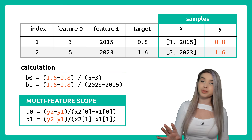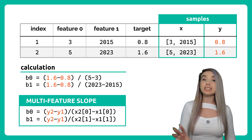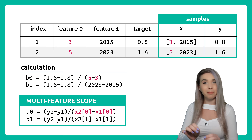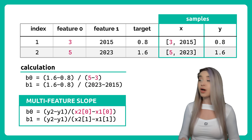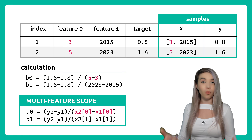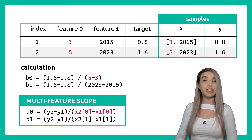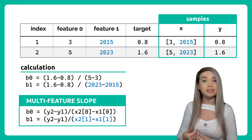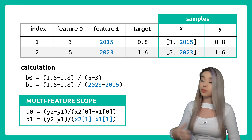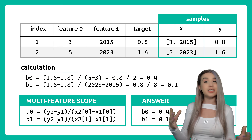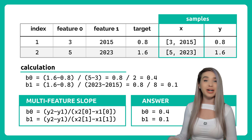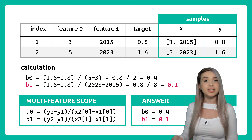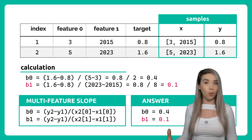In both cases we have the rise of 1.6 minus 0.8, but in terms of runs, slope 0 has the run of 5 minus 3, while slope 1 has the run of 2023 minus 2015, which gives us b0 of 0.4 and b1 of 0.1.